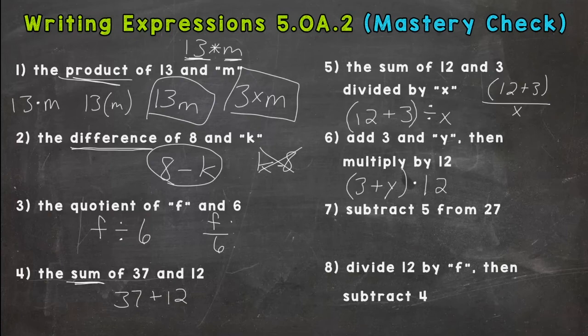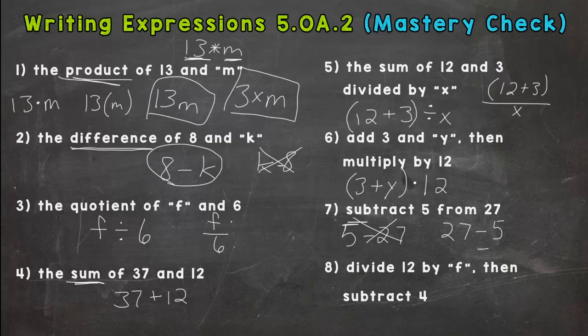Number 7, subtract 5 from 27. If I had to guess, this would probably be the most missed out of these 8. Do not do 5 minus 27. Okay? You're taking 5 from the 27, so it needs to be 27 minus 5.